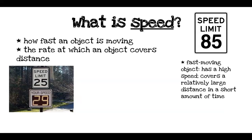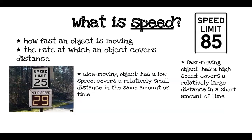If we have a car traveling at 25 miles per hour, we would consider that a slow-moving object. It has a low speed, so it covers a relatively small distance in the same amount of time. If we were on a racetrack timing both cars for one minute, the car traveling 85 miles per hour would cover a larger distance than the car traveling 25 miles per hour.